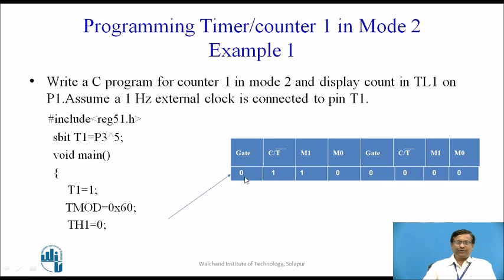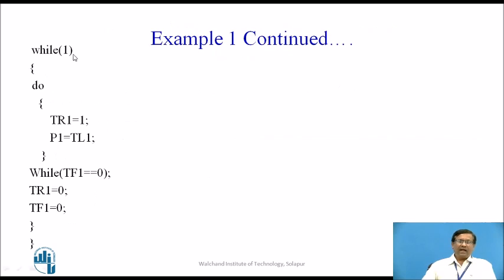For the higher nibble of TMOD: GATE is set to 0; C/T bar is set to 1 since it is a counting operation; and since we are using Mode 2, M1M0 bits are set to 1 0. This gives TMOD = 60H. Then TH1 is initialized to 0 because counting starts from 0. In the infinite while loop, Timer 1 is started by setting TR1, and whatever count is available in TL1 is transferred to Port 1.